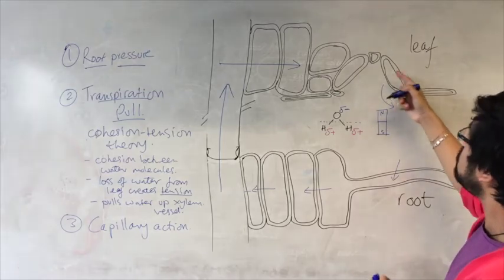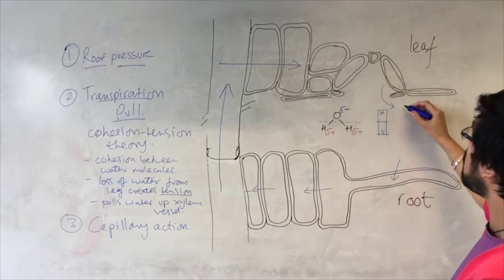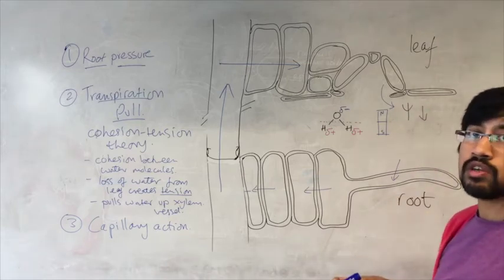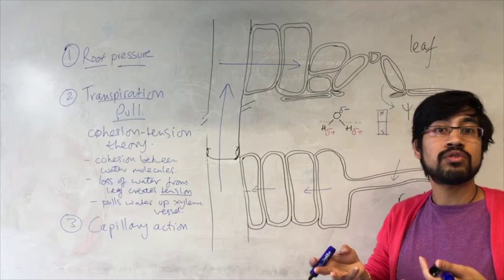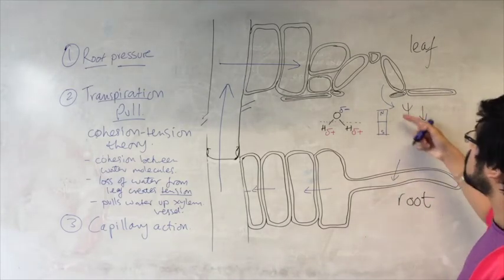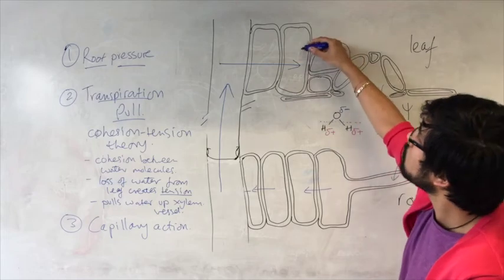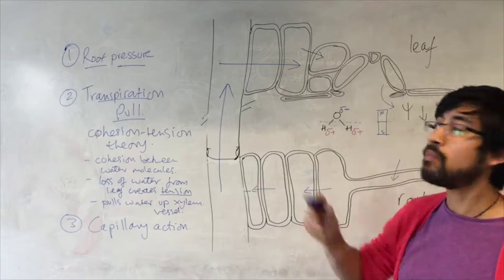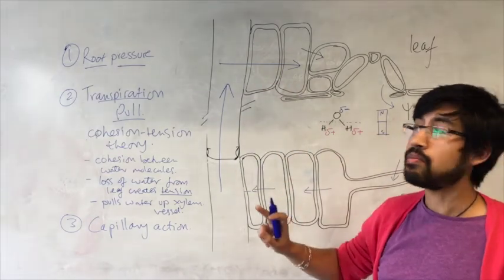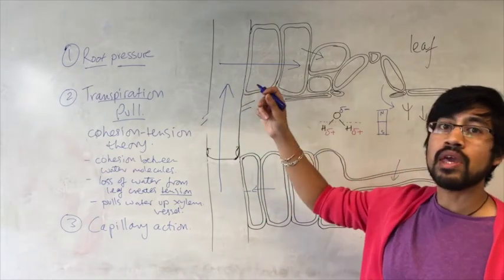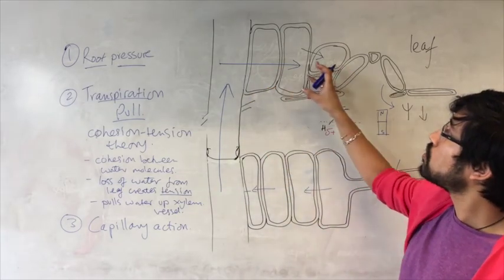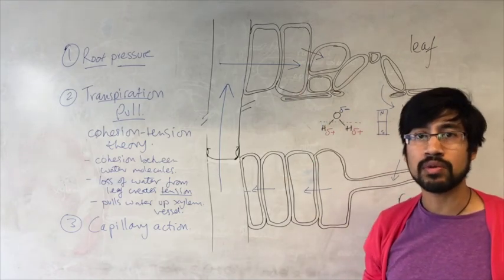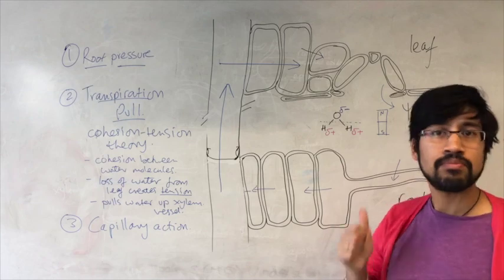Simply, if water is being lost from cells, their water potential becomes lower, because the concentration of everything that's left gets higher — the solute concentration becomes higher, the water potential becomes lower. Because of this, they will draw in water by osmosis from surrounding cells that might have more water in them. If they've got more water, they've got a higher water potential, and so water will move from cells with higher water potential to cells with lower water potential.